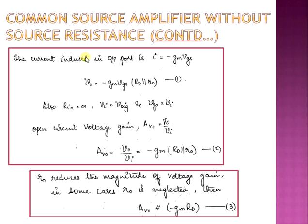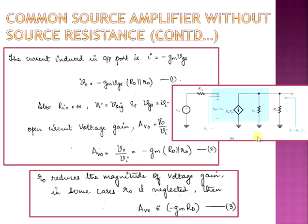The current induced in the output port from the hybrid pi model is I = −GM×VGS. We can compute the output voltage Vout = −GM×VGS × R0, where R0 = Rd ∥ r0. This is denoted as equation number 1.